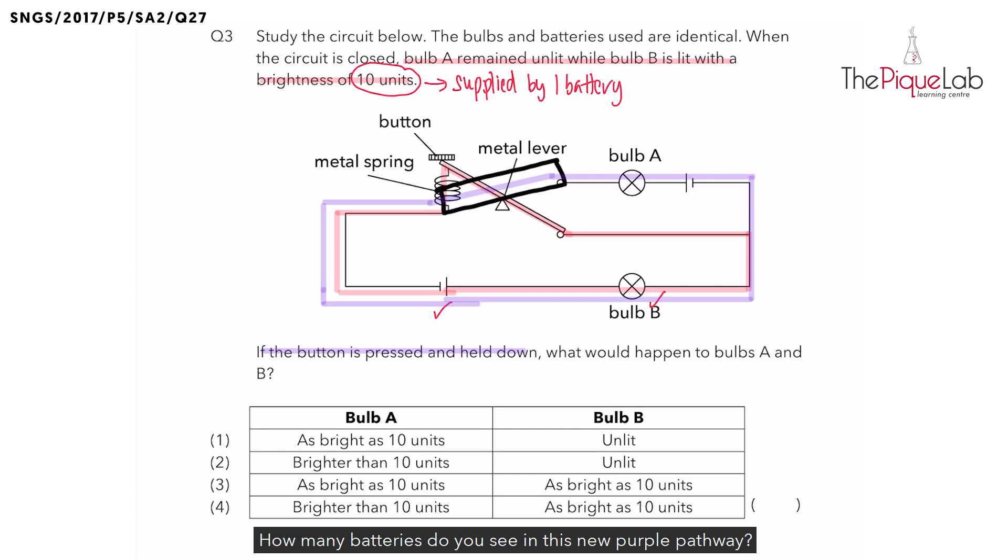How many batteries do you see in this new purple pathway? There are two batteries, and each battery produces 10 units of electricity. So, the two batteries in the purple pathway will produce 20 units of electricity. How many bulbs do you see in this purple pathway? You see bulb A and bulb B in the purple pathway sharing that 20 units of electricity.